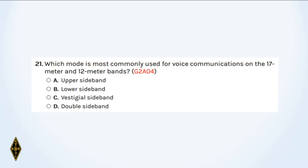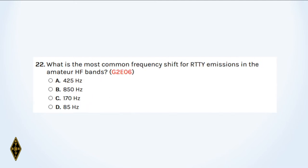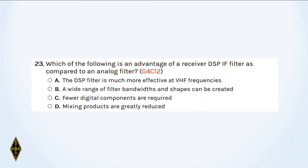Which mode is most commonly used for voice communications on the 17-meter and 12-meter bands? What is the most common frequency shift for RTTY emissions in the amateur HF bands? And 23: Which of the following is an advantage of a receiver DSP-IF filter as compared to an analog filter?